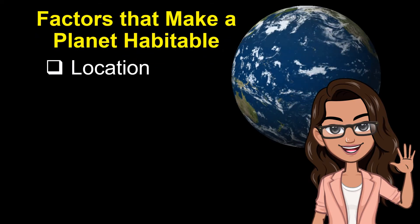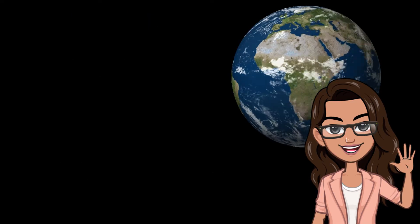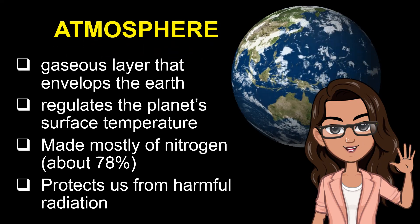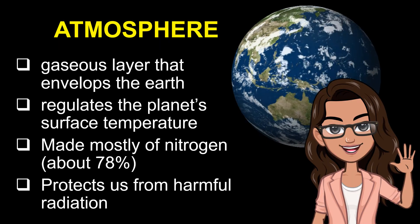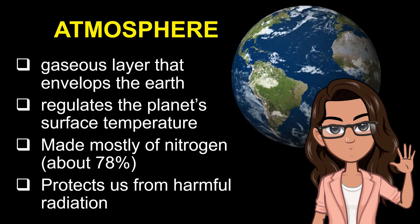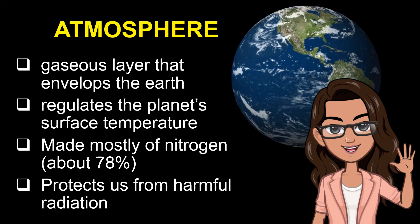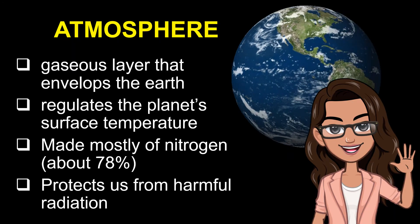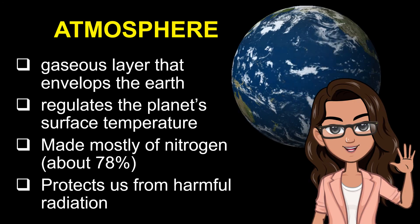The second factor that make a planet habitable is the atmosphere. The atmosphere is the gaseous layer that envelopes the Earth. It regulates the planet's surface temperature. Most of the element that makes up the atmosphere is nitrogen, about 78%. If we compare the Earth to an apple, the atmosphere is relatively the size of its peel. However, due to its cooling mechanisms, it protects the living things to be directly affected with harmful radiation.